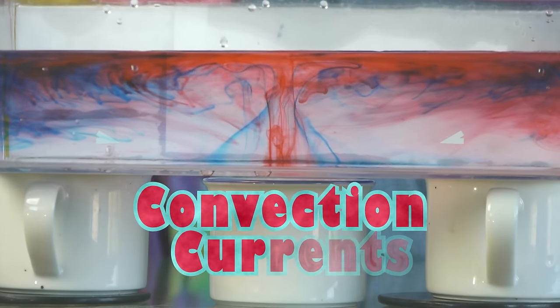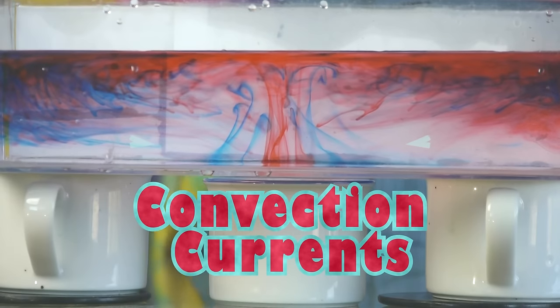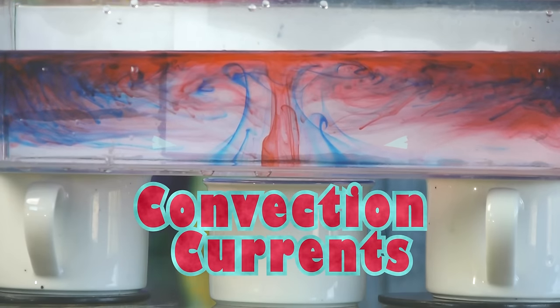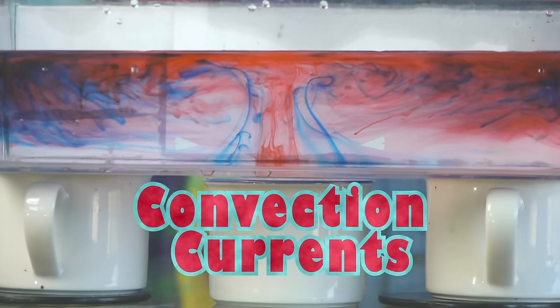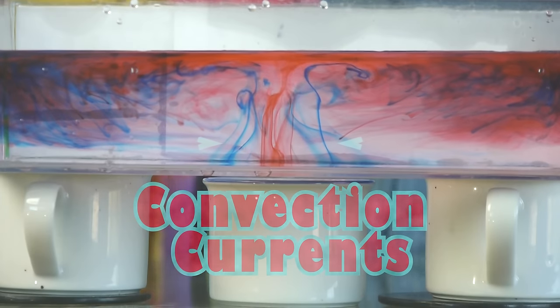These are called convection currents, and you see them moving here in two big ovals. They're one of the major things that drive ocean currents, especially in the deep oceans.